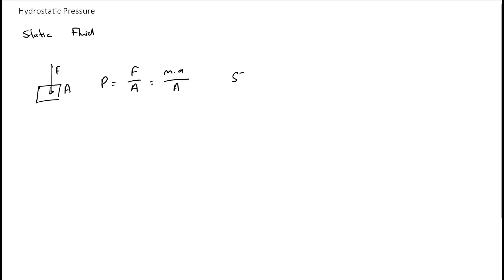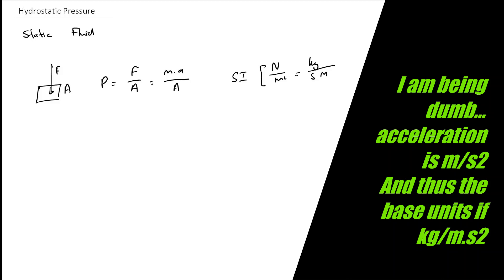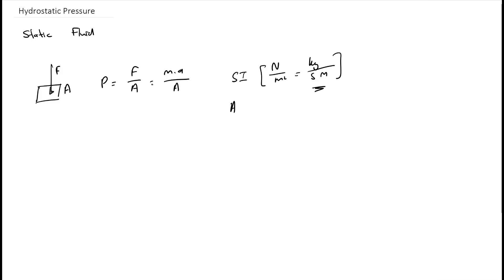The SI units for force is newtons and for area is square meters. Looking at the equation, mass will be kilograms and acceleration will be meters per second squared, with the meters cancelling out to give newtons per square meter. In the American engineering system this will be given as psi — pounds per square inch. Very importantly, this pound is a pound-force and not a pound-mass.